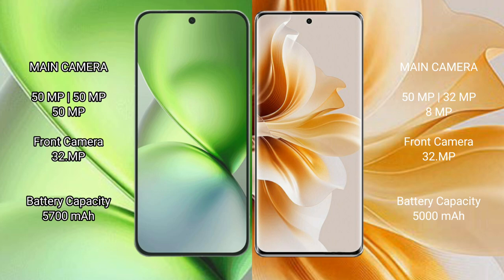The Vivo X200 Pro Mini rear cameras are 50MP plus 50MP plus 50MP, with a 32MP front camera. The Oppo Reno 11 rear cameras are 50MP plus 32MP plus 8MP, with a 32MP front camera. The Vivo X200 Pro Mini has a 5700mAh battery with 90W fast charging, while the Oppo Reno 11 has a 5000mAh battery with 80W fast charging.